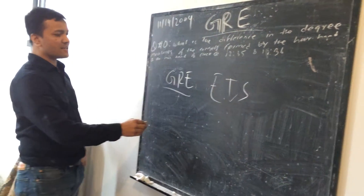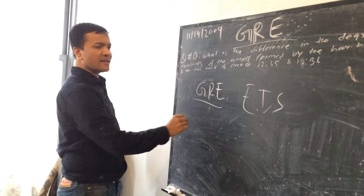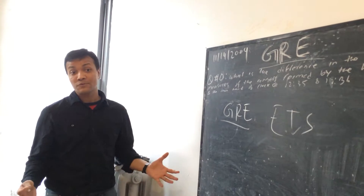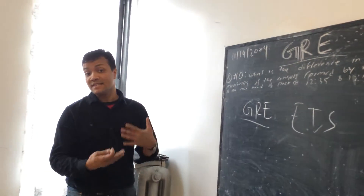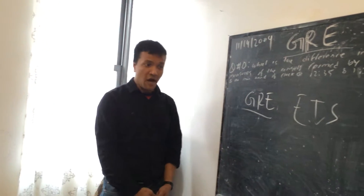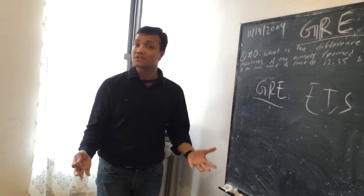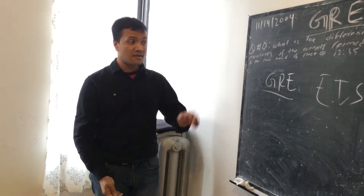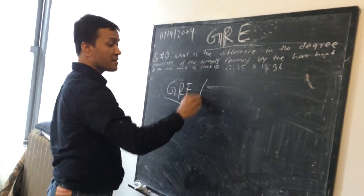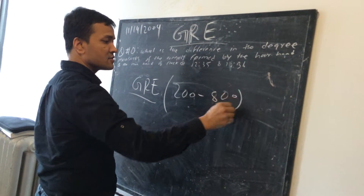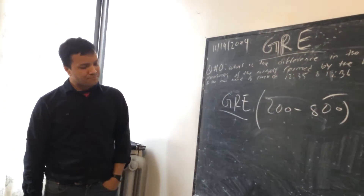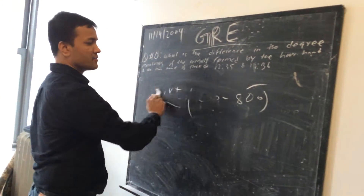The GRE tests student ability in reading, writing, and critical thinking — to measure student ability in these three areas to see whether they are ready for graduate school or not. Also, most scholarship decisions depend on the GRE score, which ranges from 200 to 800, so 800 is the highest score.